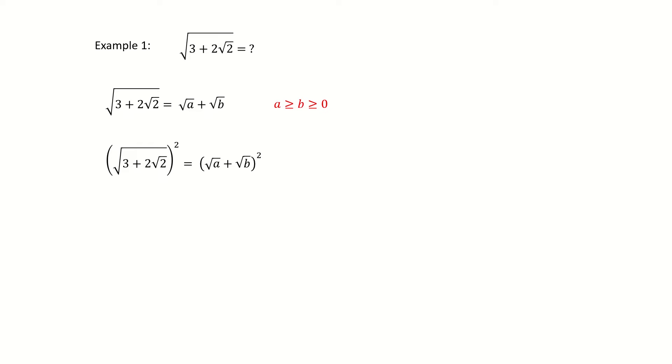Next, we square them on both sides. For left-hand side, we got 3 plus 2 square root 2. For the right-hand side, we expand it. I marked this equation in different colors. So the terms without square root equals to the terms without square root. And the terms with square root equals to the terms with square root.